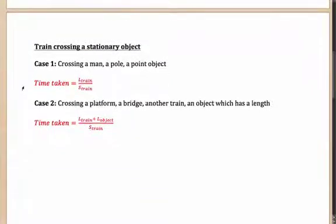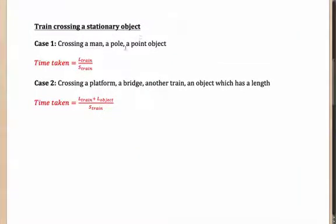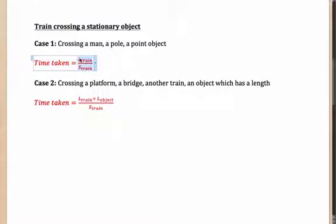Let us look at the simple case when the train is crossing a stationary object — it can be crossing a man, a pole, a deer, or something which can be considered a point object. In that case, the time taken for the train to cross is the length of the train divided by the speed of the train. To cross a point object, the distance the train has to cover is nothing but its own length, at the speed it is running. So the formula is: Time = Length of train / Speed of train.